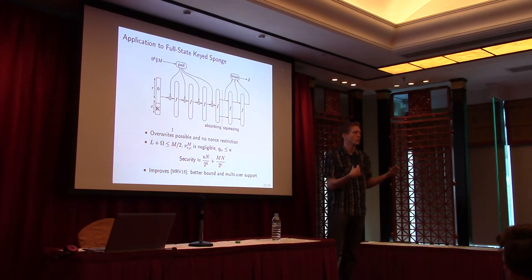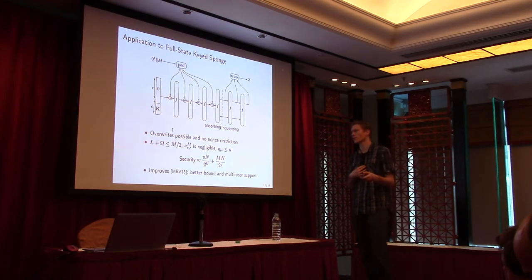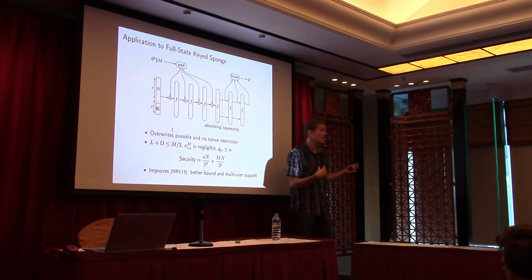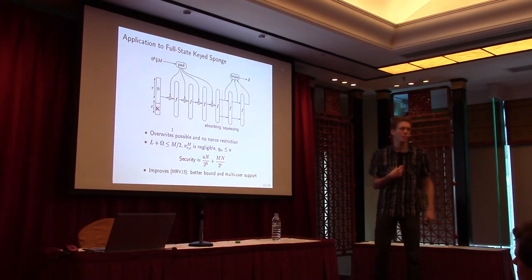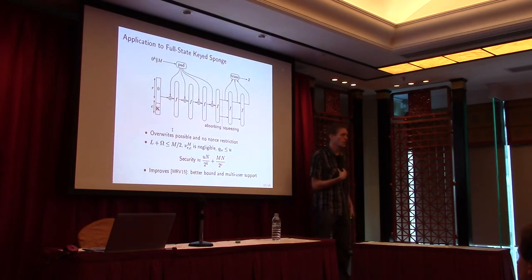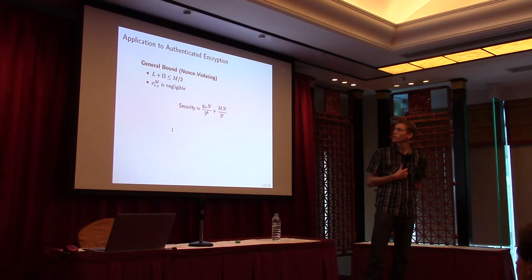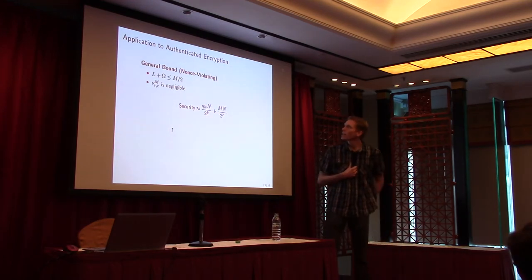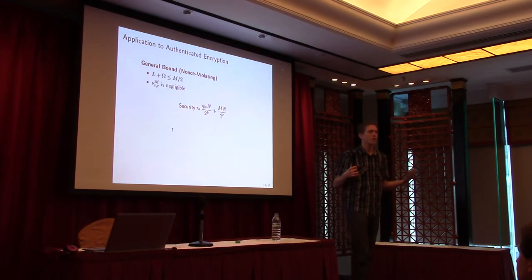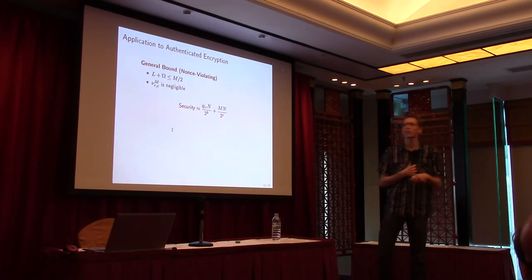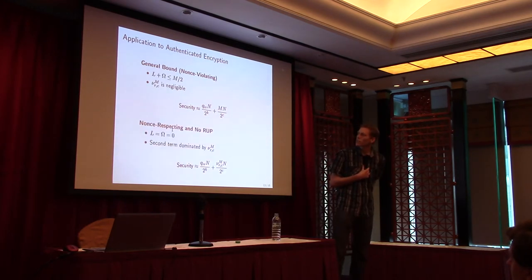Without a nonce restriction, overrides are possible, L and omega can be arbitrarily large — at most about M. The nu_rcm term is negligible. QIV is the number of users, so you get U times N over 2 to the K plus M over 2 to the C, which improves the bound from two years ago. For authenticated encryption we consider two cases: the nonce-violated case with arbitrary overrides where L and omega are at most M, giving a similar bound.